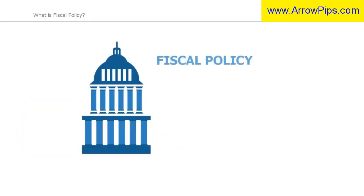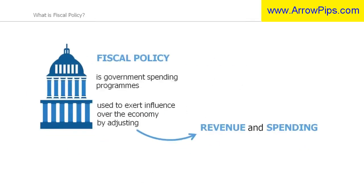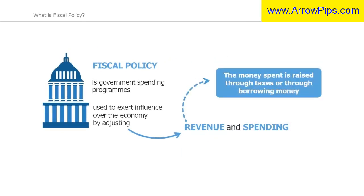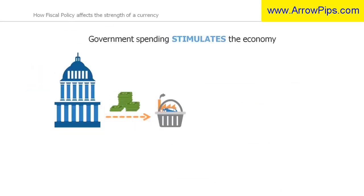Fiscal policies are government spending programs, and they are used to exert influence over the economy through controlling revenue and spending. The money that a government spends is either raised through taxation or through borrowing by issuing debt securities. If a country spends more money than it earns, then this is called a budget deficit. Government spending is usually a prominent way of stimulating the economy, and can either be directed at specific projects, such as building or developing infrastructure, or by hiring employees.